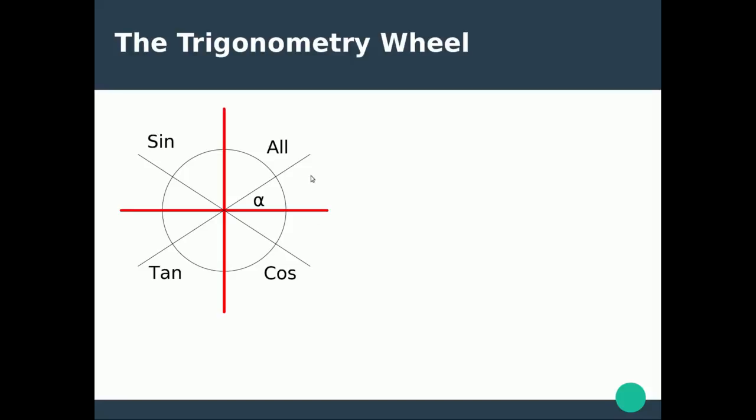Now it's important to understand that this is the positive direction, whereas this is the negative direction. So from here to here is pi, from here to here it's minus pi. Now we've split this up and we've got this sine, all, tan, and cosine here.